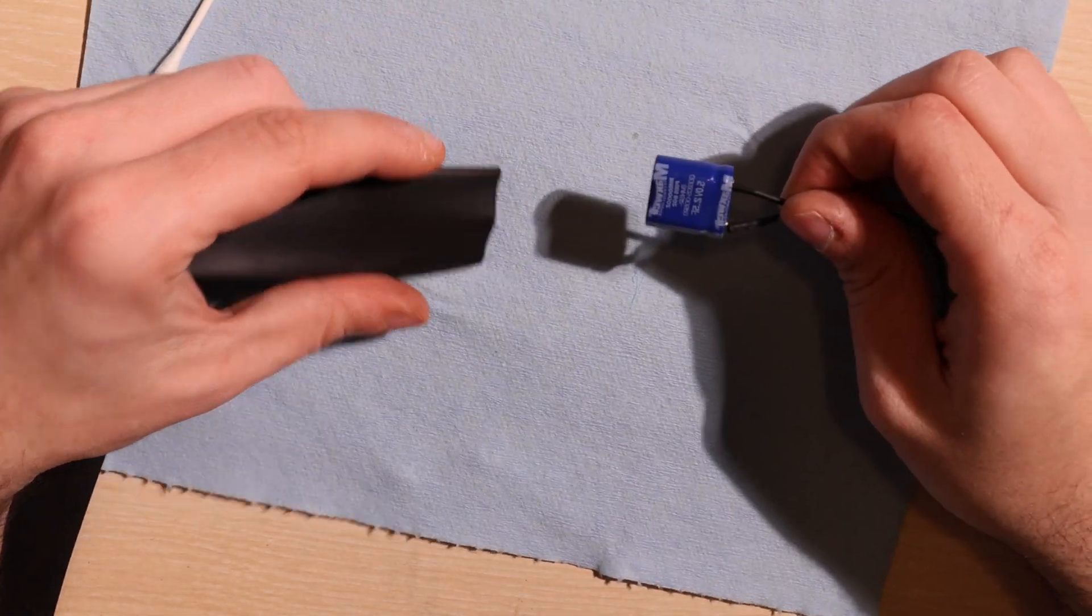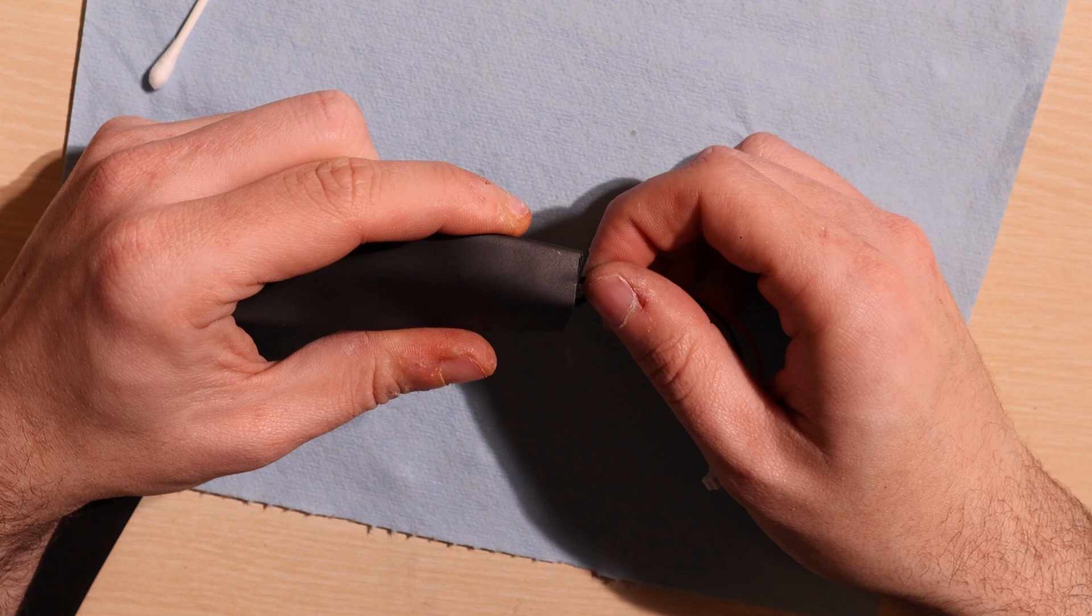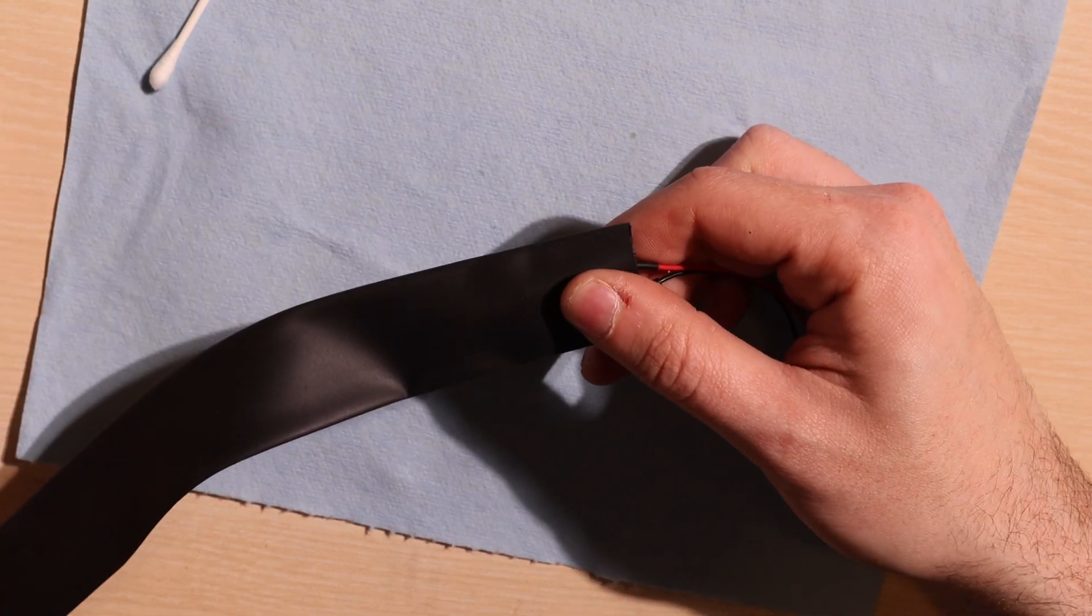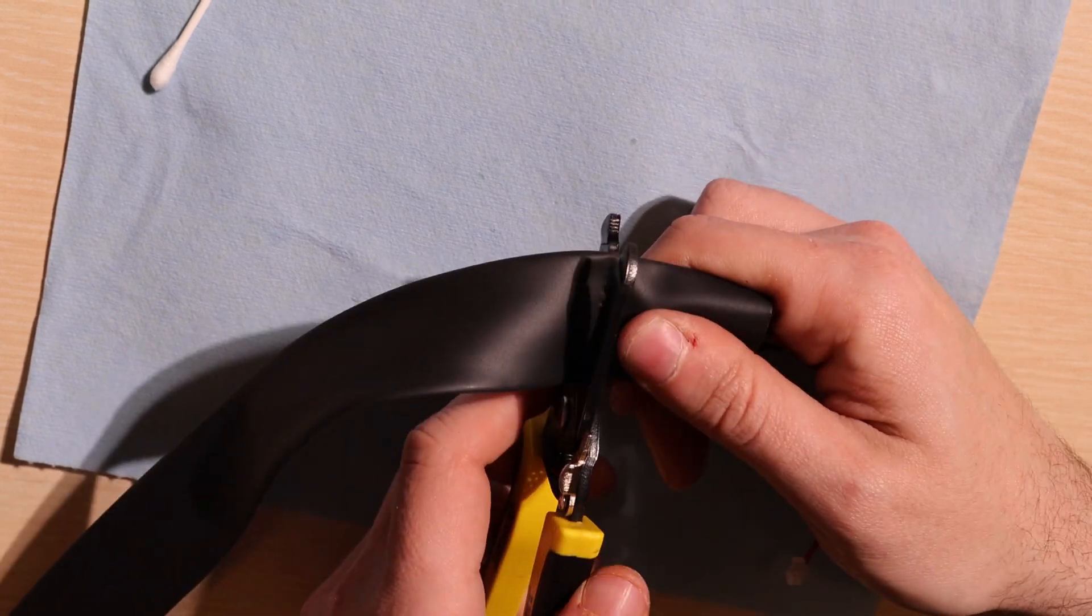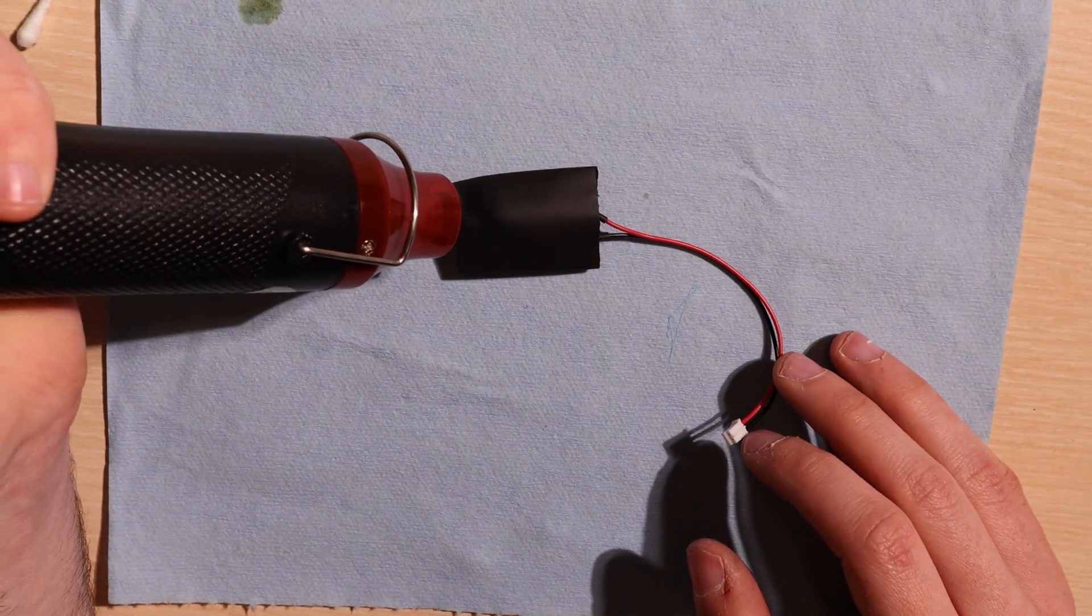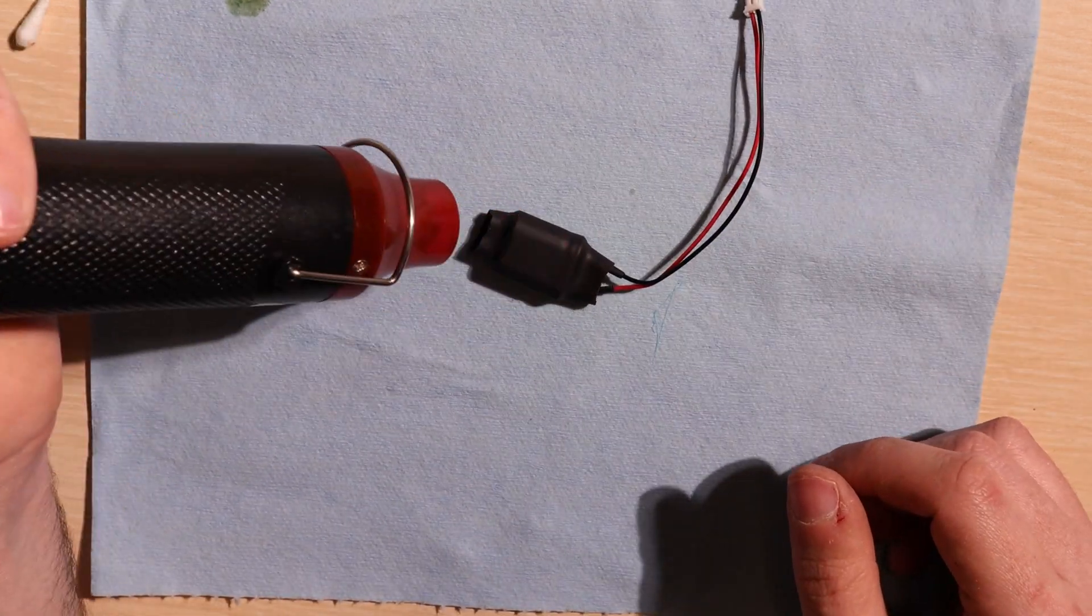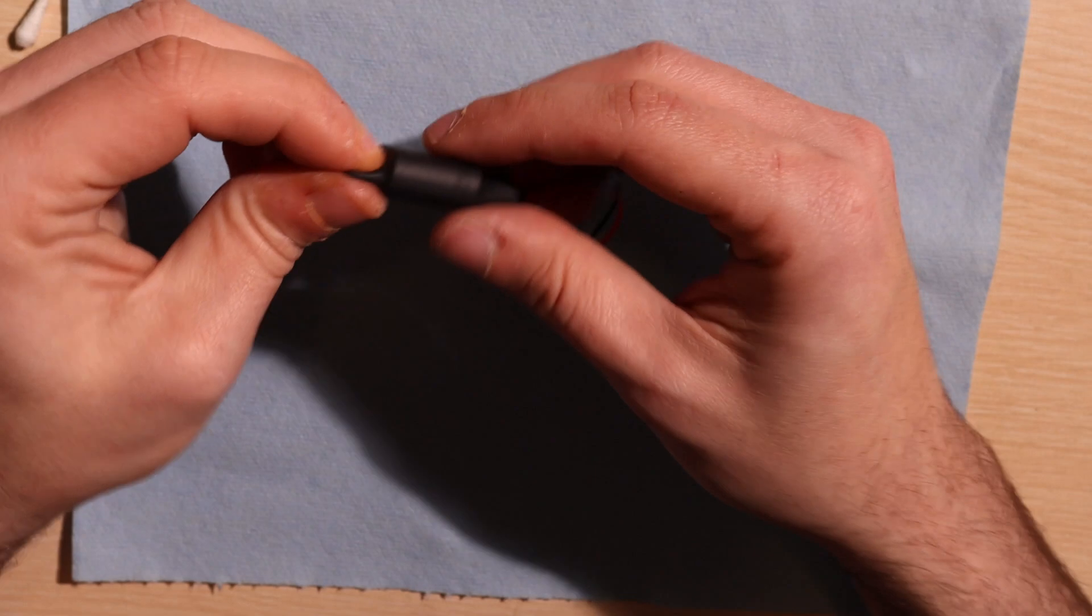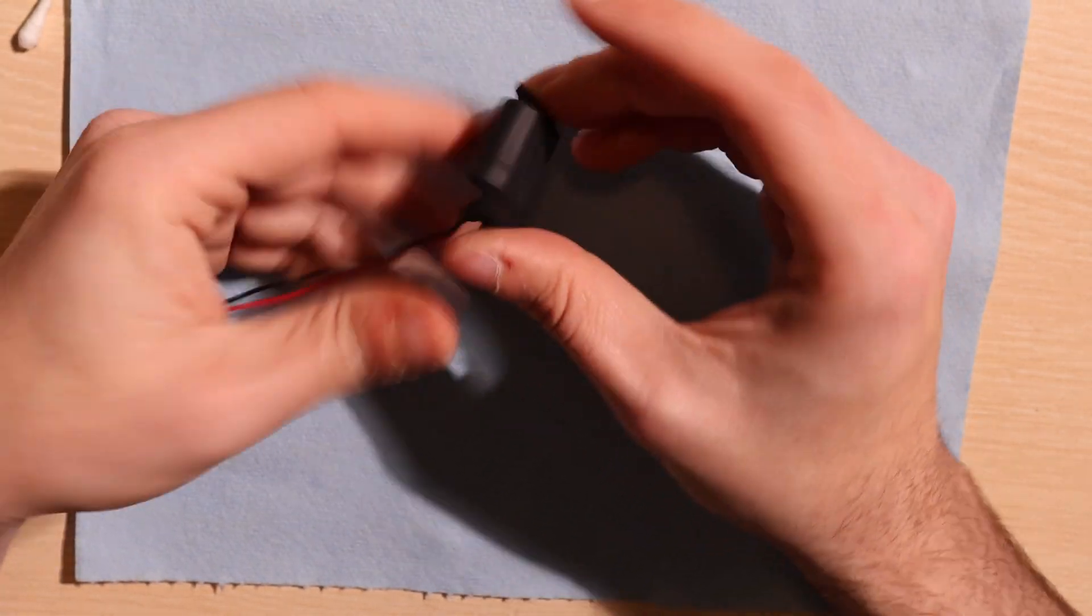To complete our BCR we're going to again wrap it in one inch heat shrink tubing to completely encapsulate the capacitor and protect the electronic components. Now that we have our finished BCR let's go test it in a Protosound 2 3 volt engine.